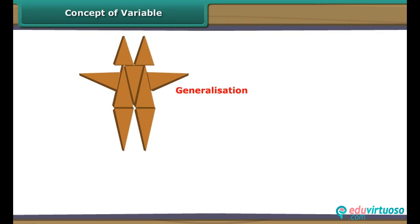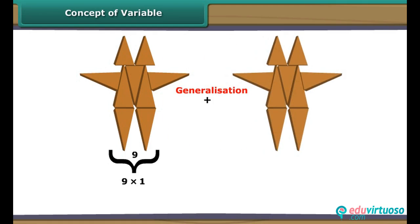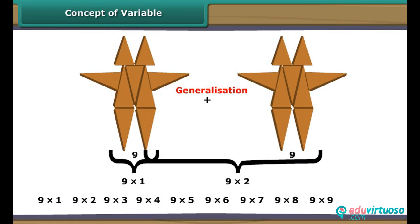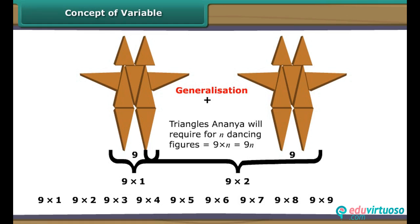The triangles Ananya uses in a single dancing figure are fixed. However, the total number of triangles used by her varies depending upon the number of dancing figures she makes. We can therefore generalize by saying: if Ananya makes n dancing figures, she will require nine into n triangles.